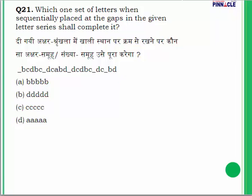Question 21: Complete the letter series. Break the given series into groups of 4. Each group contains all four letters (e.g., C, A, B, D) with no repetition. Following the pattern, the missing positions are filled with 'A'. The correct answer is option D.